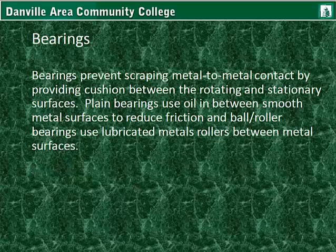Bearings prevent scraping metal-to-metal contact by providing cushion between the rotating and stationary surfaces. Plain bearings use oil in between smooth metal surfaces to reduce friction, and ball or roller bearings use lubricated metal rollers between the metal surfaces.